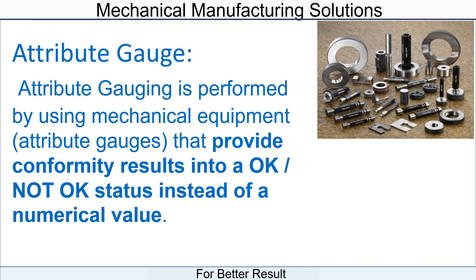For example, if you check the ID of any bored part, we ensure it by checking through a plug gauge — go and no-go. Go confirms okay and no-go confirms not okay. This status is enough for the mass production condition. To ensure slot width we can check by slip gauges. These attributed gauges are used for 100% inspections.